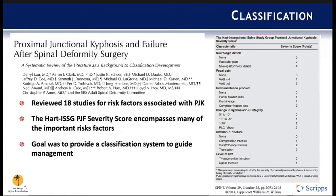Also in 2014, a paper in Spine by the Adult Spinal Deformity Committee with Hart et al. attempted to provide a classification system to guide management. They provided a severity score encompassing six factors: neurologic deficits, focal pain, instrumentation problems, change in kyphosis, PCL integrity, fracture at the upper instrumented vertebrae or the caudal vertebra above the UIV, and the level of the UIV.